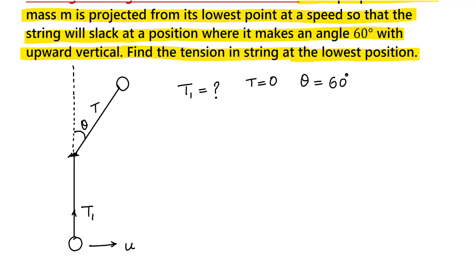To solve this problem, you have to use two things. First, the bob is moving in circular motion, so you write the equation of motion in the circle: force towards the center equals mass times radial acceleration. Second, you use energy conservation.